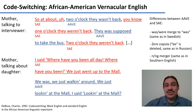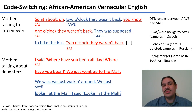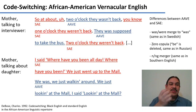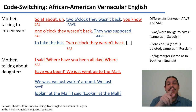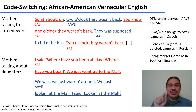You can also have code switching between two dialects of the same language. For example, Standard American English and African American Vernacular English. It happens at the same points where you would take a breath to keep going. For example: "At about two o'clock, they wasn't back." Some parts of speech are in Standard American English — marked in red — and some parts are in African American Vernacular English — in blue.